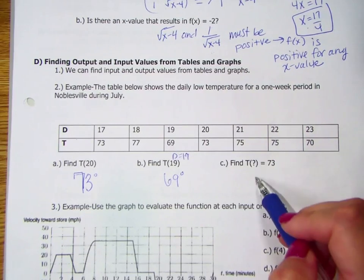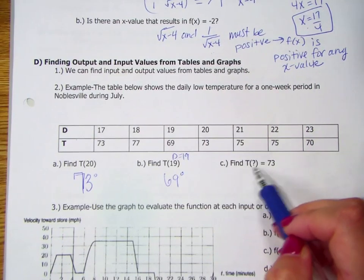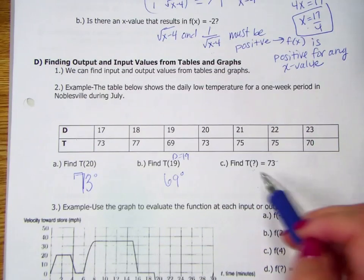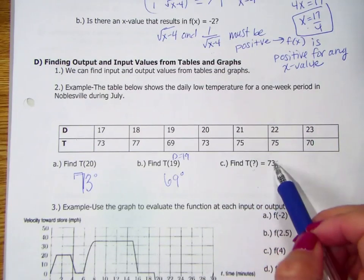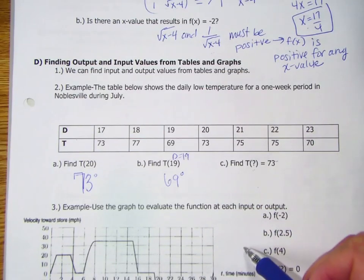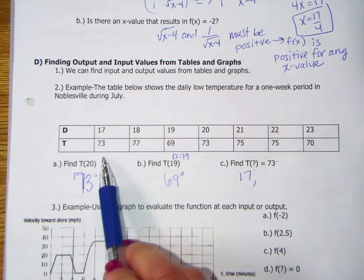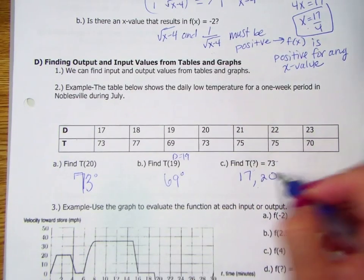Going the other direction, find T of what equals 73 degrees? So on what date does the temperature equal 73 degrees? So look at your temperatures. We see that that could be the 17th, and we see that that could be the 20th.